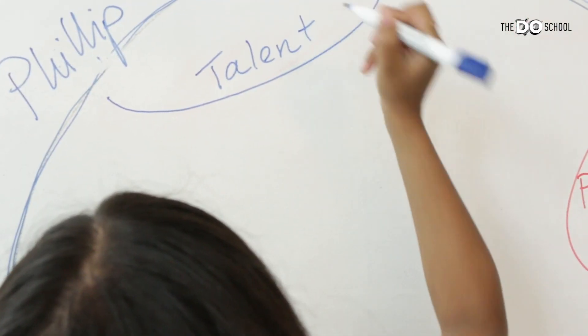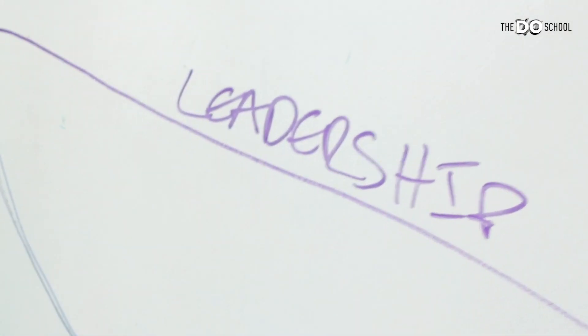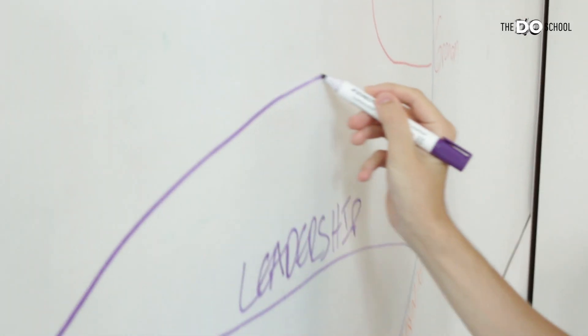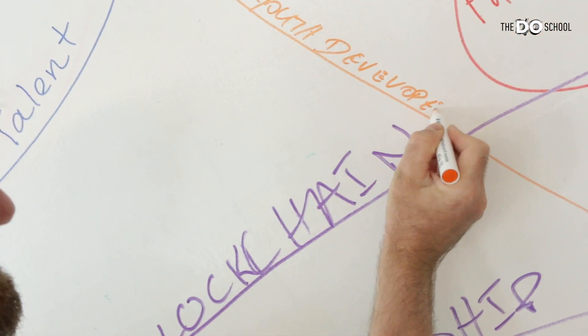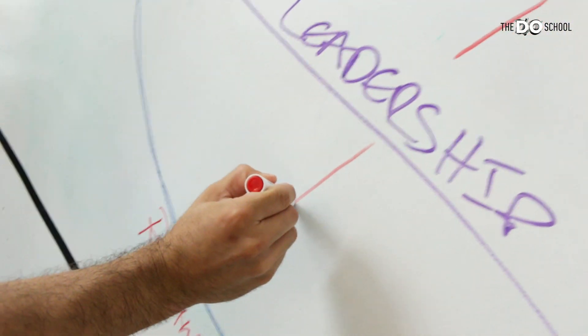Once they've done that, they move on to the next conversation. At the end you have a circle that visualizes all the connections of the people in the room with the respective topics written on them.